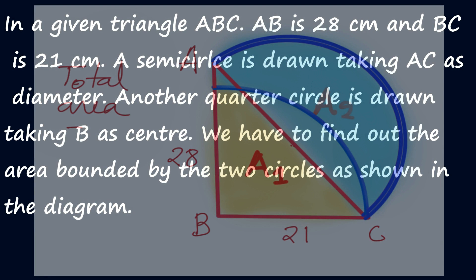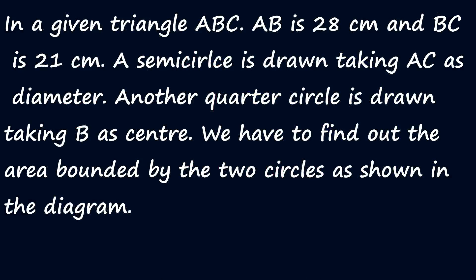In a given triangle ABC, AB is 28 cm and BC is 21 cm. A semicircle is drawn taking AC as the diameter, another quarter circle is drawn taking B as center. We have to find out the area bounded by the two circles as shown in the diagram.